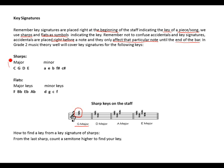In Grade 2 theory, we will be covering the sharp major keys: C, G, D, E, and minor keys: A, E, B, F sharp and C sharp. For major keys with flats: F, B flat, E flat, A flat, and minor keys with flats: D, G, C, and F sharp keys on the staff.